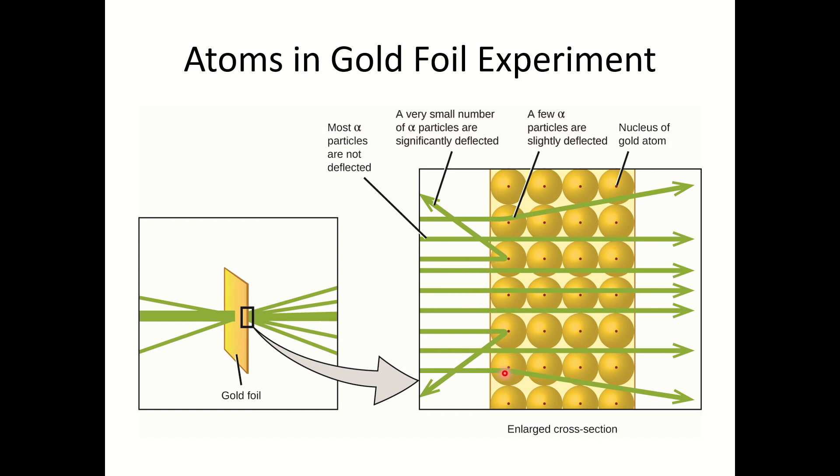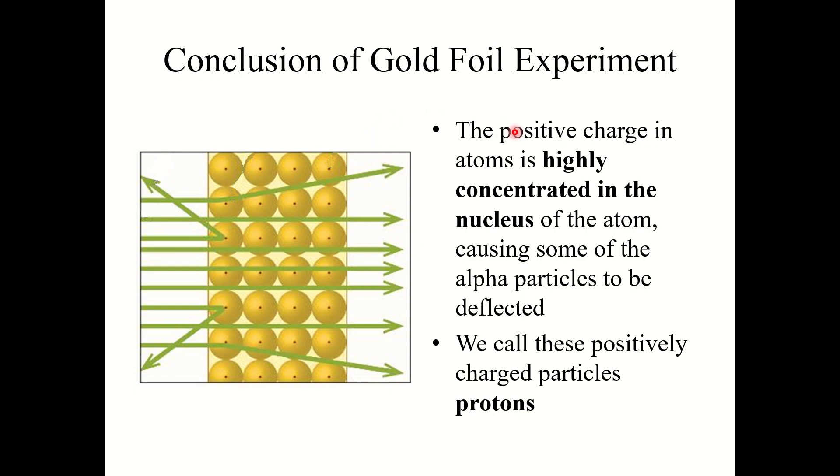Now a few of them may slightly bounce off the positive matter in the middle and so they are partially or slightly deflected. And a smaller number still might just so happen to land and hit that positive matter in the middle in a direct impact. And so if they hit that matter in the middle with a direct impact, they will significantly deflect and bounce off at a strong angle. So this explains why most of these particles go straight through. So he concluded the positive charge in atoms is highly concentrated in the nucleus, causing some of the alpha particles to be deflected, but most of them pass through. And we now call these positively charged particles protons.